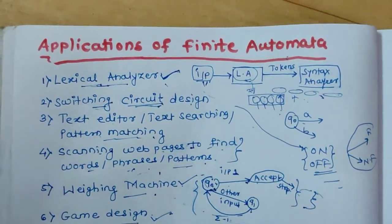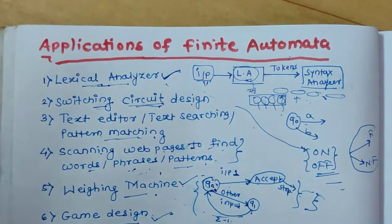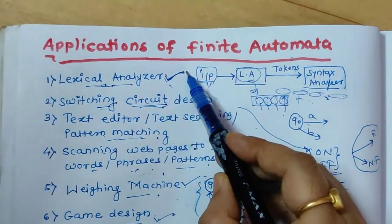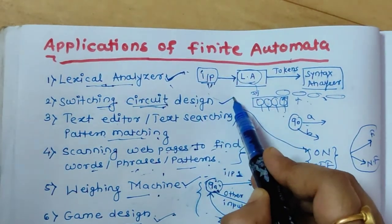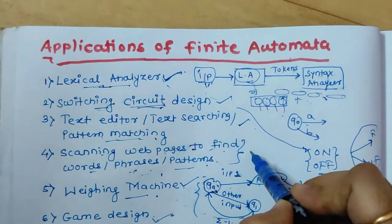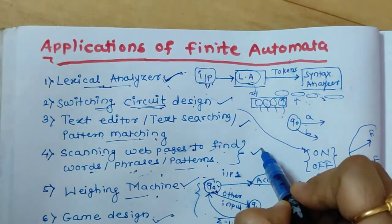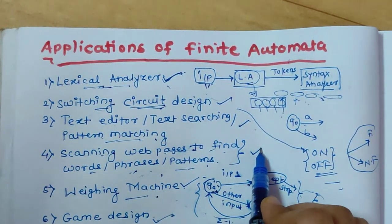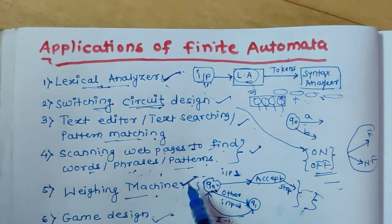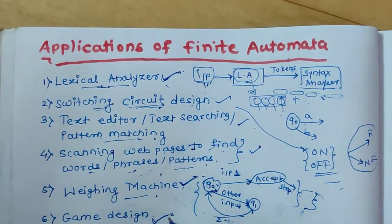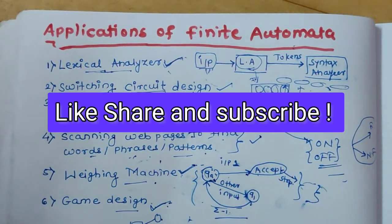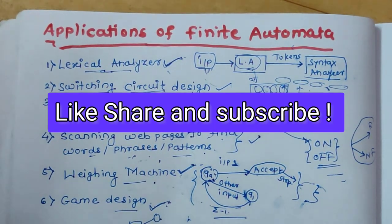All these are the applications of finite automata. To briefly revise: it can be used in lexical analysis, in switching circuit design, as a text editor, to scan web pages for words, phrases, or patterns, in weighing machines, and in gaming design. That's all for this video. Thank you for watching, and don't forget to like, share, and subscribe to see more videos on this topic.